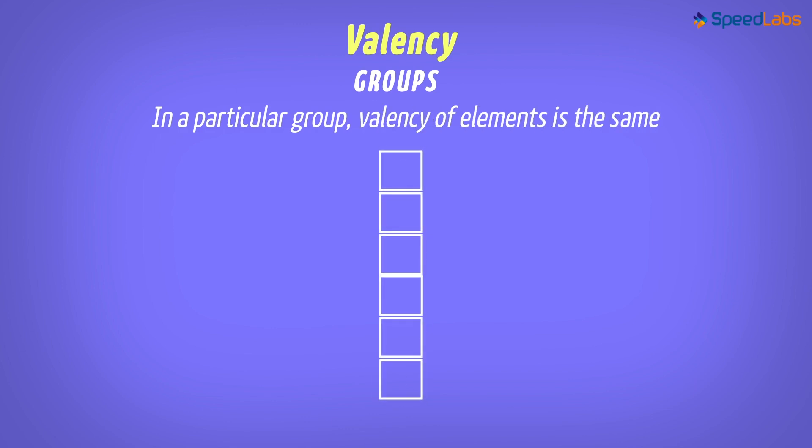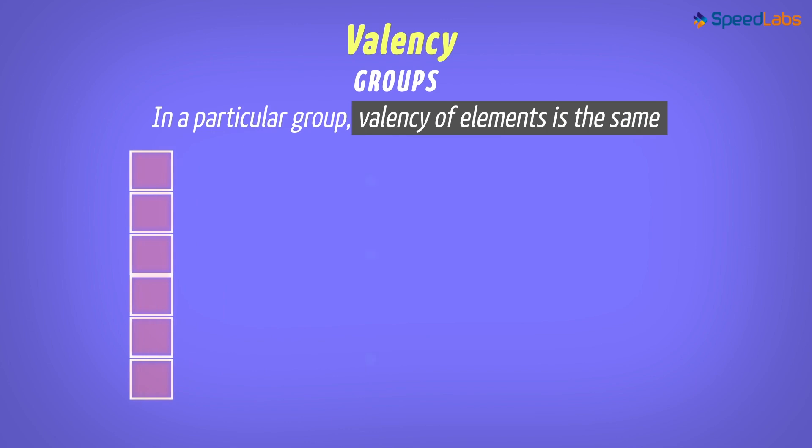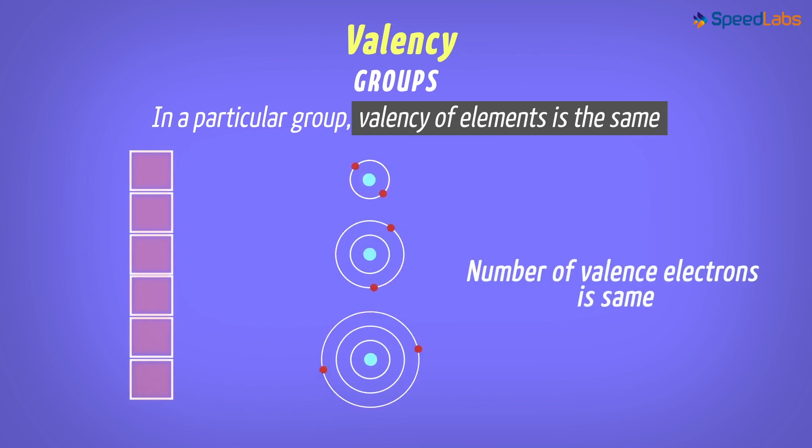That is, when we move down the group, the valency of elements remains the same. And why do you think this is the case? This is because the number of valence electrons is the same throughout the group.